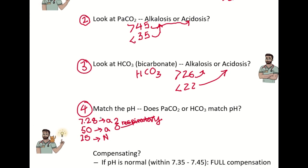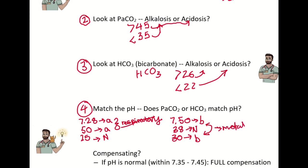Another example: pH of 7.5, PaCO2 of 38, and bicarb of 30. The pH is greater than 7.45 — basic. The PaCO2 is 38, which is within normal range. The bicarb is greater than 26, so it's basic. Since the pH and the bicarb match, this person is in a metabolic state.